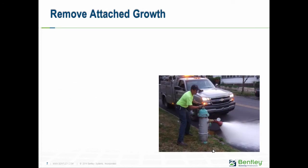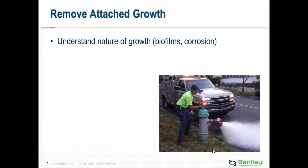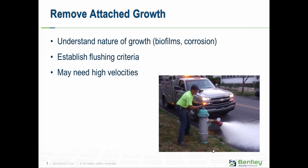When it comes to removing attached growth, you need to understand the nature of what you're trying to remove. Do some pilot areas using different velocities to see whether changing velocity changes the biofilm in the pipe. Some suggest you can remove tuberculation or corrosion products with flushing, but usually you can't get a high enough velocity. You may be able to remove some loose scale, but for most attached growths the velocities and shear stresses required are too great — you need something like pigging or scraping. First, establish flushing criteria: what distinguishes successful flushes from unsuccessful ones?